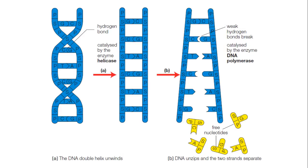Here we can see another diagram to explain the process. The double helix molecule with its hydrogen bonds is unwound by the helicase enzyme, and then the hydrogen bonds between the nucleotides break, which is catalyzed by the DNA polymerase enzyme. The nucleotides within the cell are available to be added to our unzipped DNA strand.